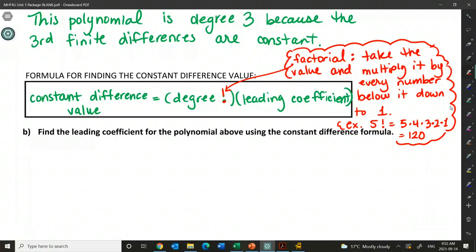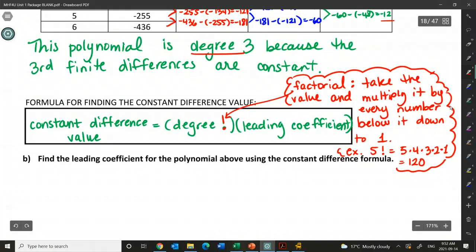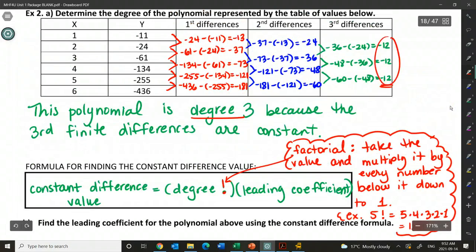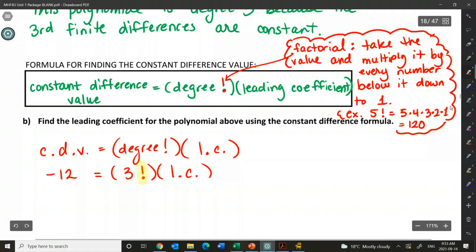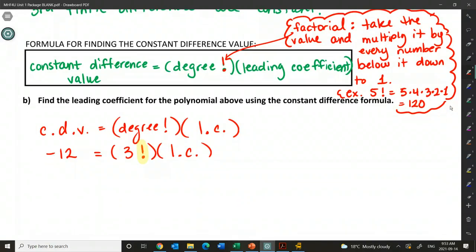So for our example above, our table of values above, we want to find the leading coefficient using that constant difference formula. So I know the degree is 3 and I know the constant difference in this column is negative 12. I'm going to plug those into the formula. I'm going to find the leading coefficient. So I'm just going to say constant difference value is equal to degree factorial. I mean, we don't necessarily need to rewrite the equation, but, and then I'm just going to use LC for leading coefficient. So constant difference value above is negative 12 and our degree above is 3. So this is going to be 3 factorial. I'm just going to highlight this as a reminder.